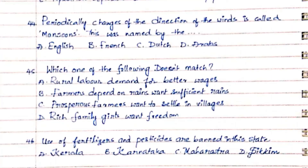Question 44: Periodically changing direction of the winds is called monsoons. This term was named by the. Option A. English, Option B. French, Option C. Dutch, Option D. Arabs. The answer is Option D. Arabs.